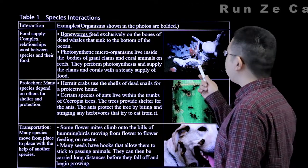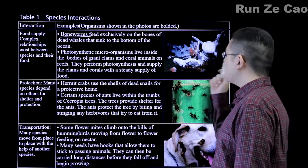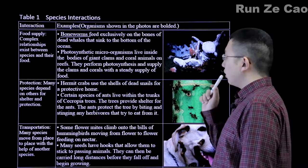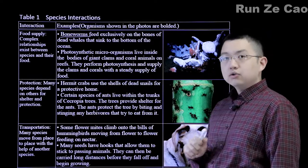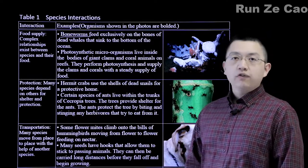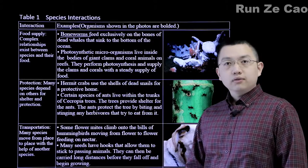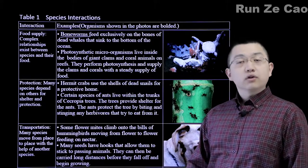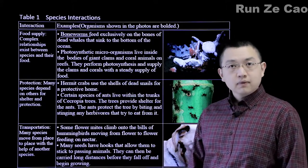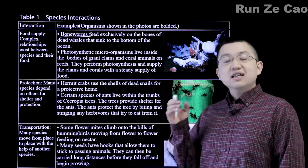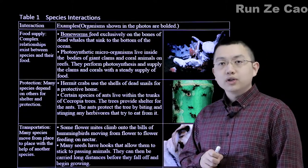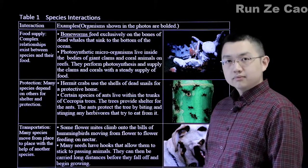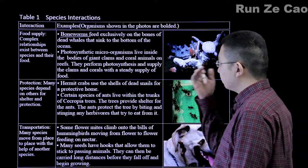Bone worms disperse their young on routes where whales commonly migrate. You can have a whale fall every few miles or every few kilometers even. This is close enough for young bone worm larvae to make the trip.